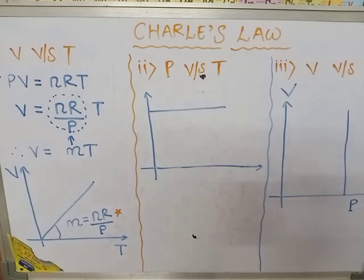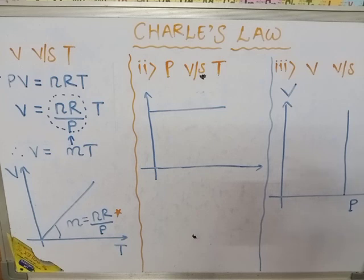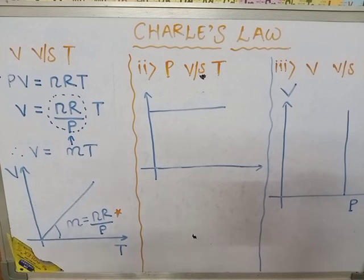Note that a numerical question can be formed from this graph. If the slope M of the V versus T graph is given, and since R is a universal constant, you can find either n or P if the other is given. From here we can solve numerical questions.